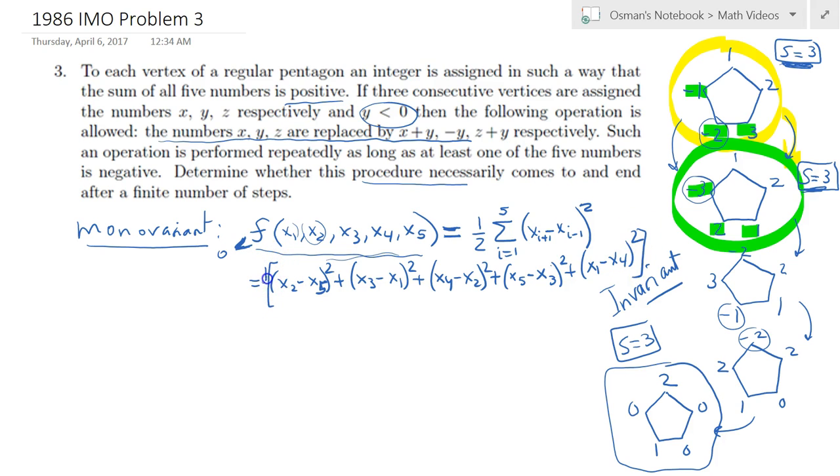I claim this function has the desirable properties that I was mentioning early on. At each state, we will compute this function, and eventually, if we can prove that as we apply our operation described in the problem, the value of this function keeps decreasing—but by definition this function is always non-negative because of these squares, which are always positive—what it means is eventually this successive operations will come to an end after a finite number of steps. This is a property of positive integers or natural numbers.